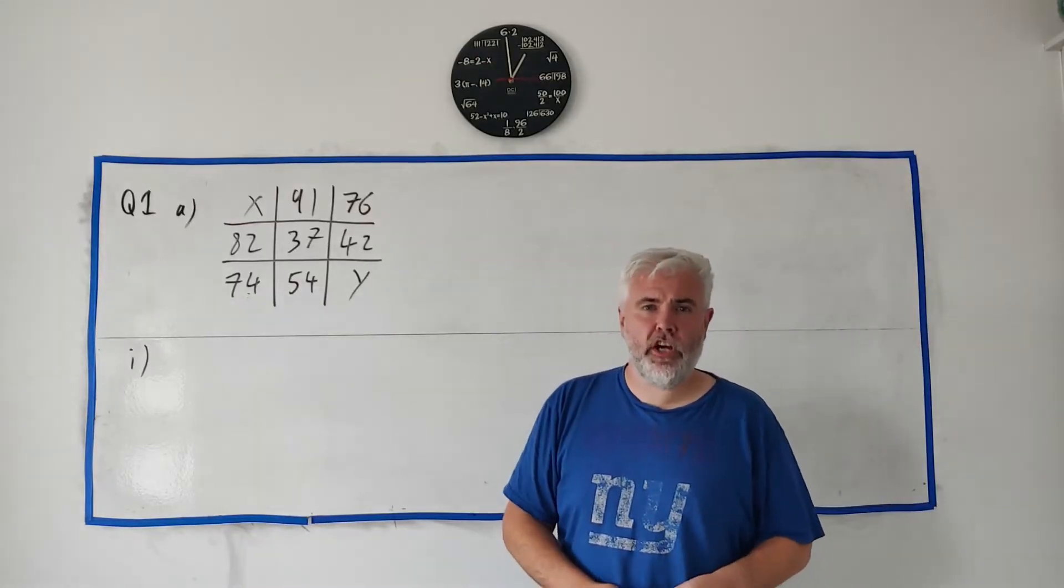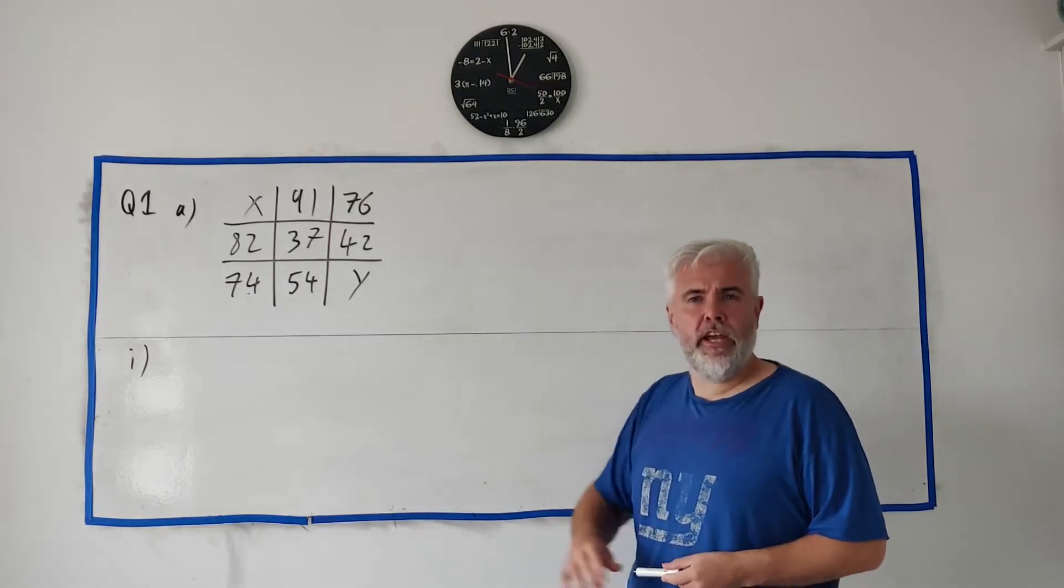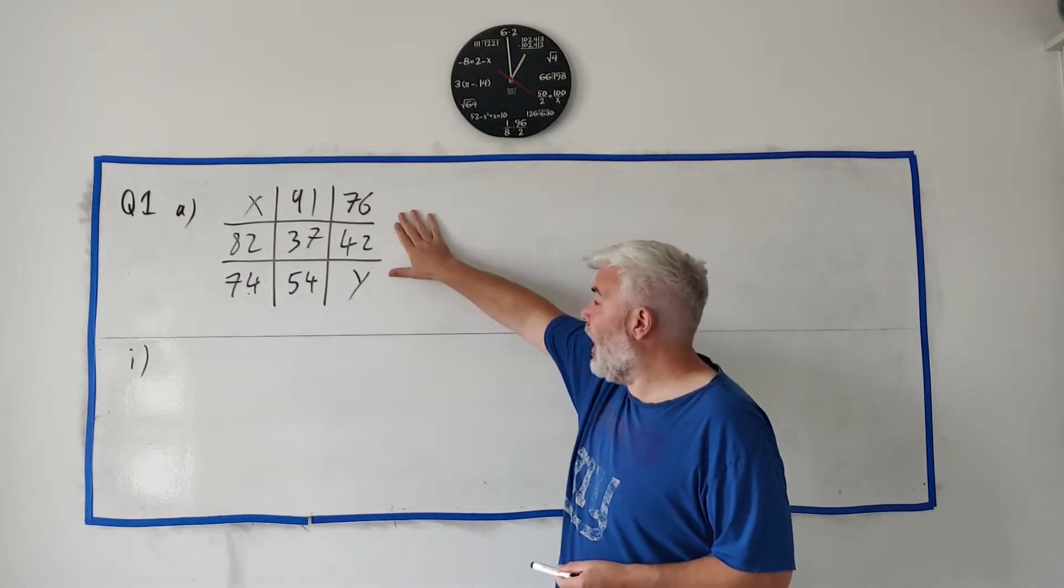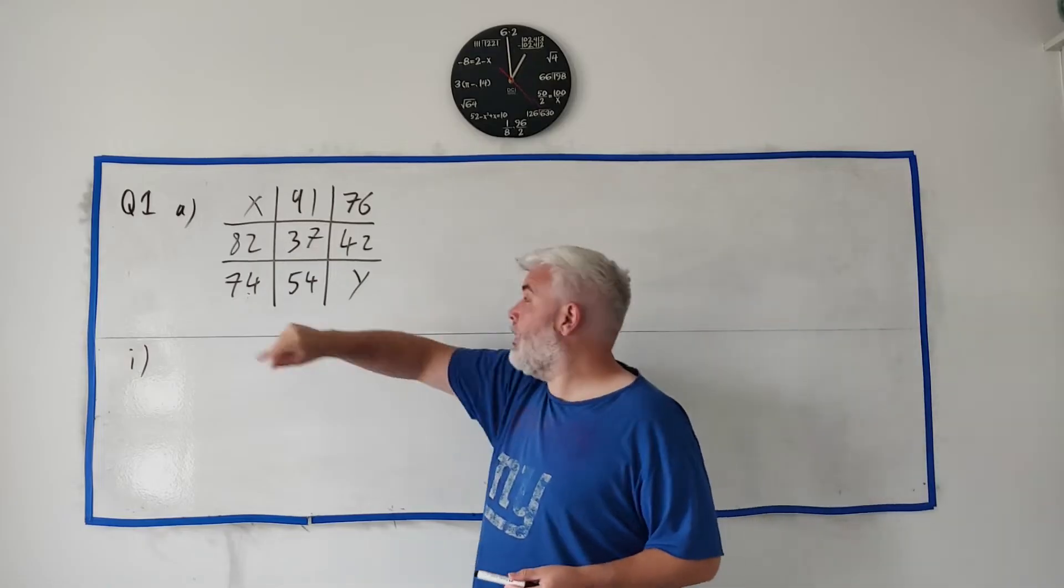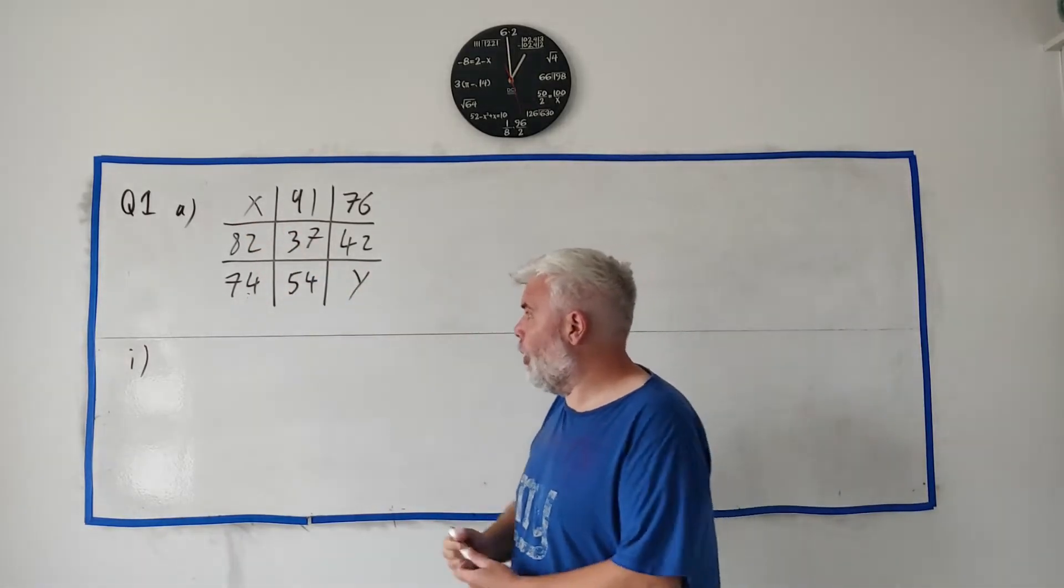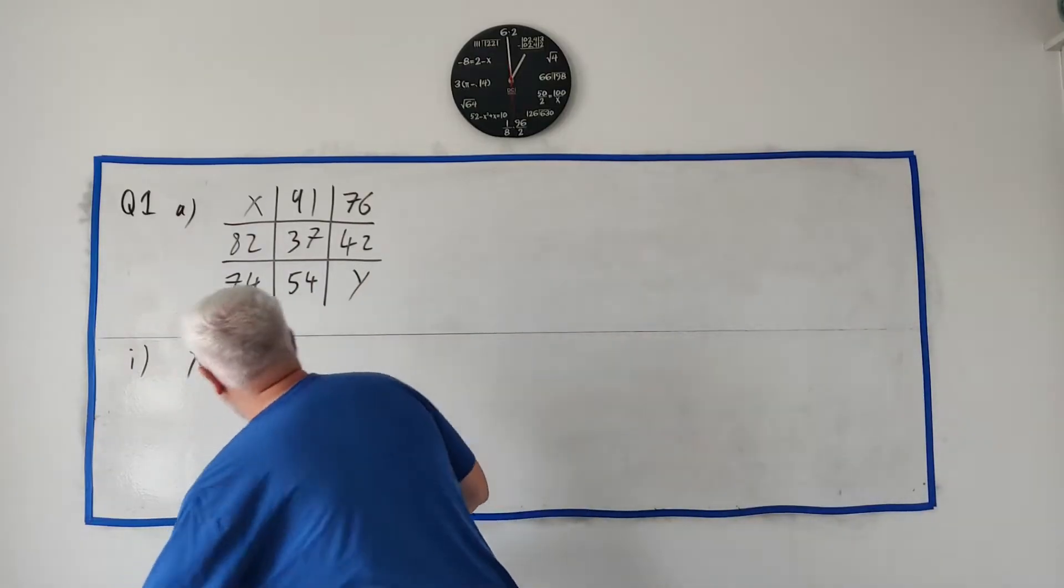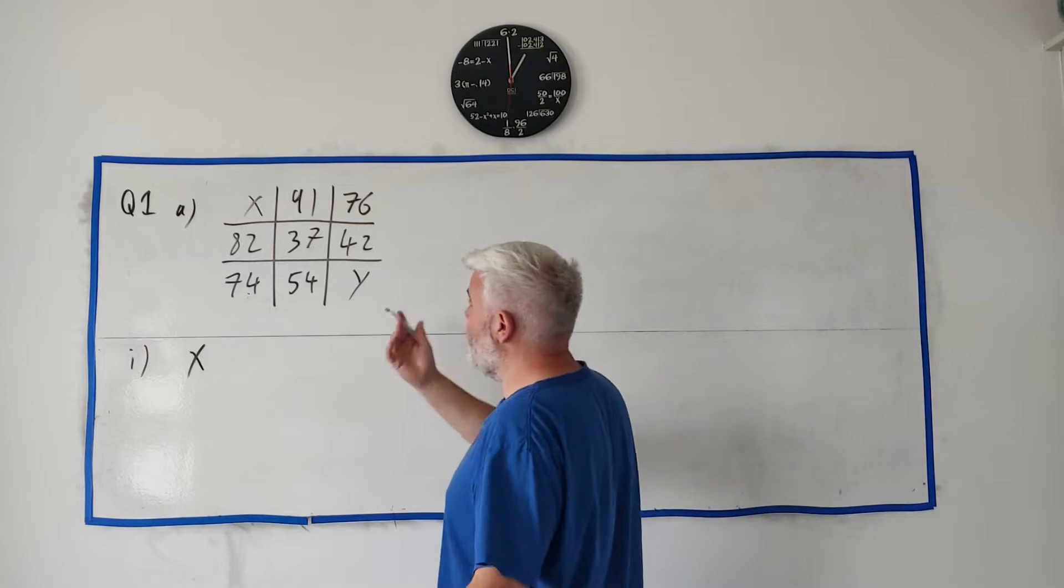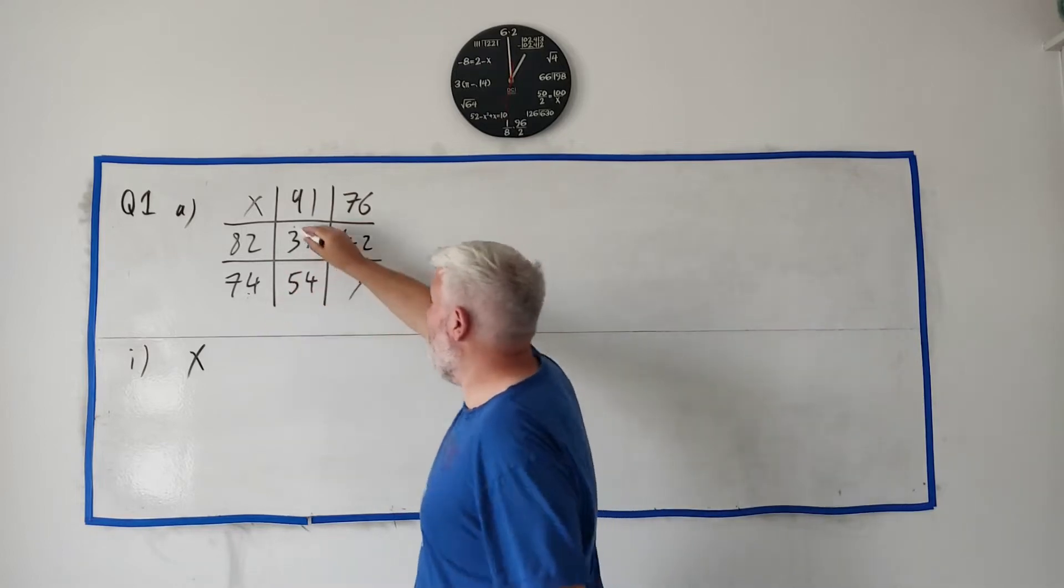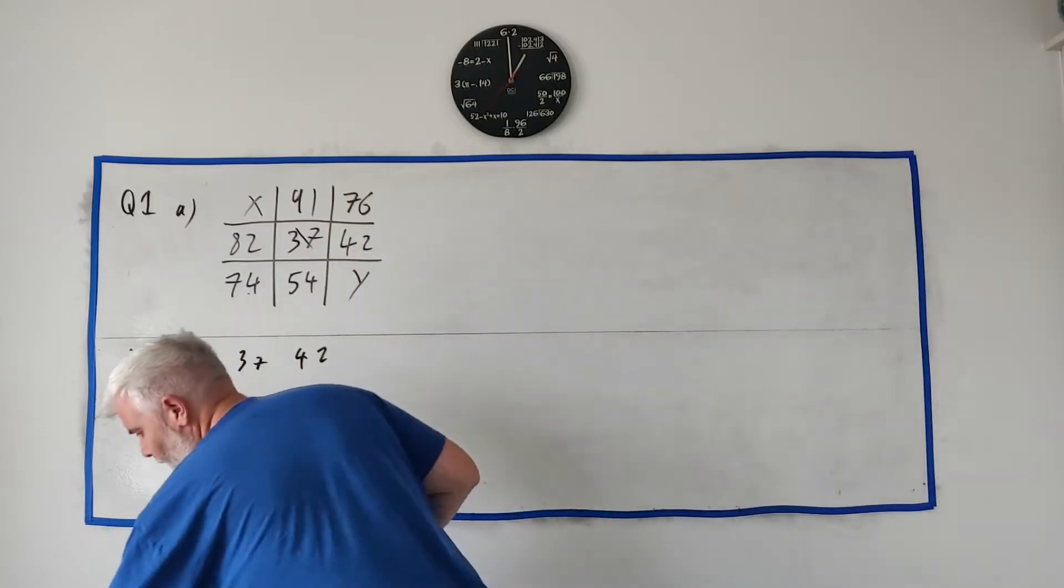Question one starts off with what might be the easiest question I've seen in the Leaving Cert. They give you these nine numbers and there's only two missing, X and Y, and they ask you to write them down in order. They start off with X already written down. So all you need to do is go through all of these numbers, which is the smallest, and then maybe mark it off. So 37, 40, just speed this up, 42.